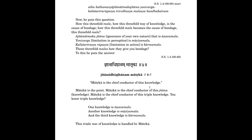This is the reality of our philosophy. The reality of knowledge is the cause of bondage. How does this threefold mala become the cause of bondage? This threefold mala: ajnana, asma jnana (that is anavamala), yonivarga (mayiyamala), kalashirirupasya (karmamala). These threefold malas, how do they give you bondage? To this he puts answer: jnana dishtanam matrika.